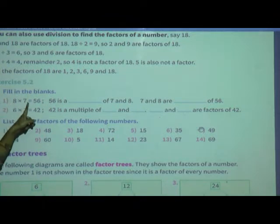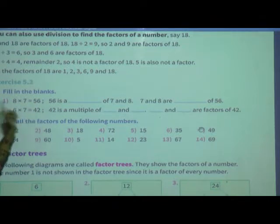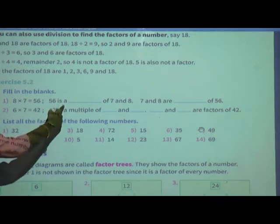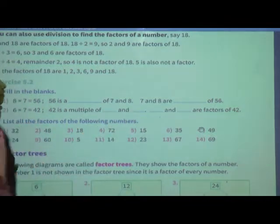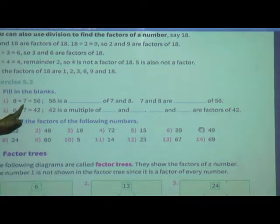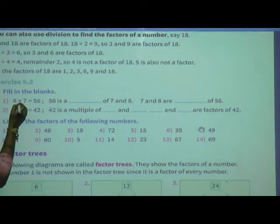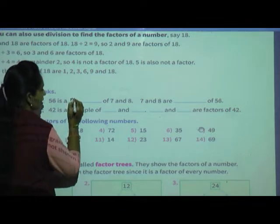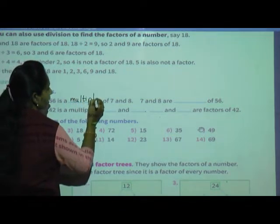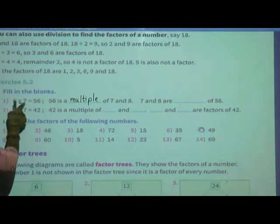First: 8 multiplied by 7 equals 56. Now the fill in the blanks says: 56 is a dash of 7 and 8. What have we done to 56? We used the multiplication symbol. So 56 is a multiple of 7 and 8.